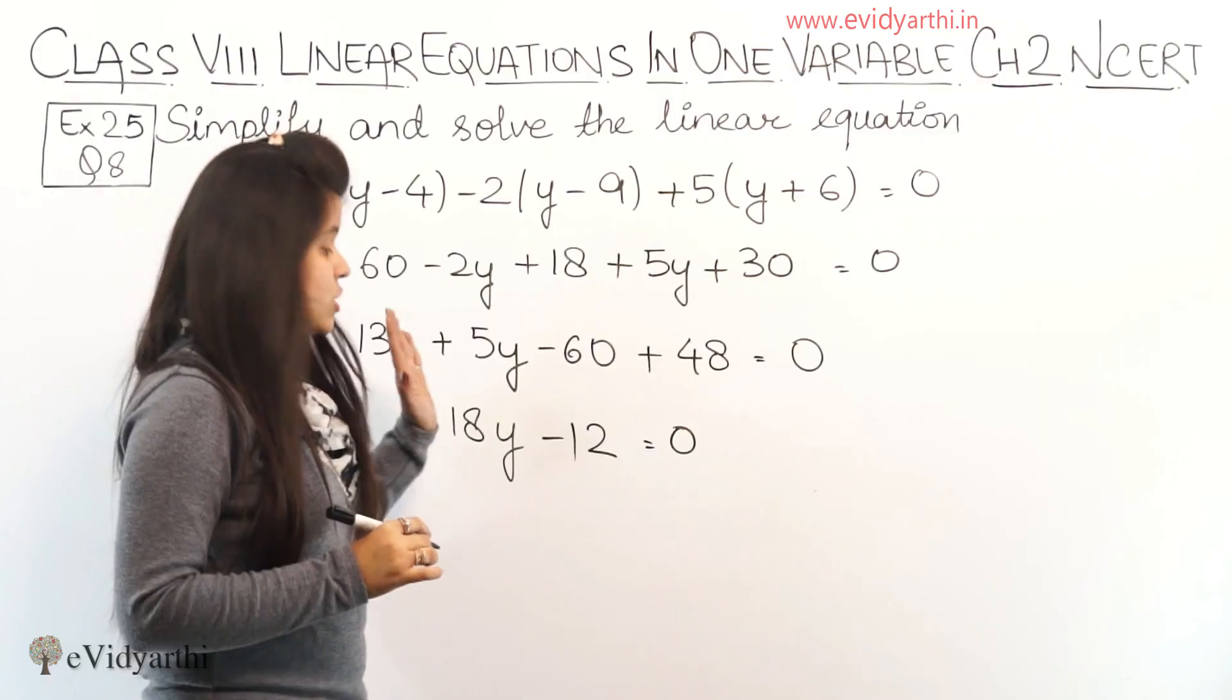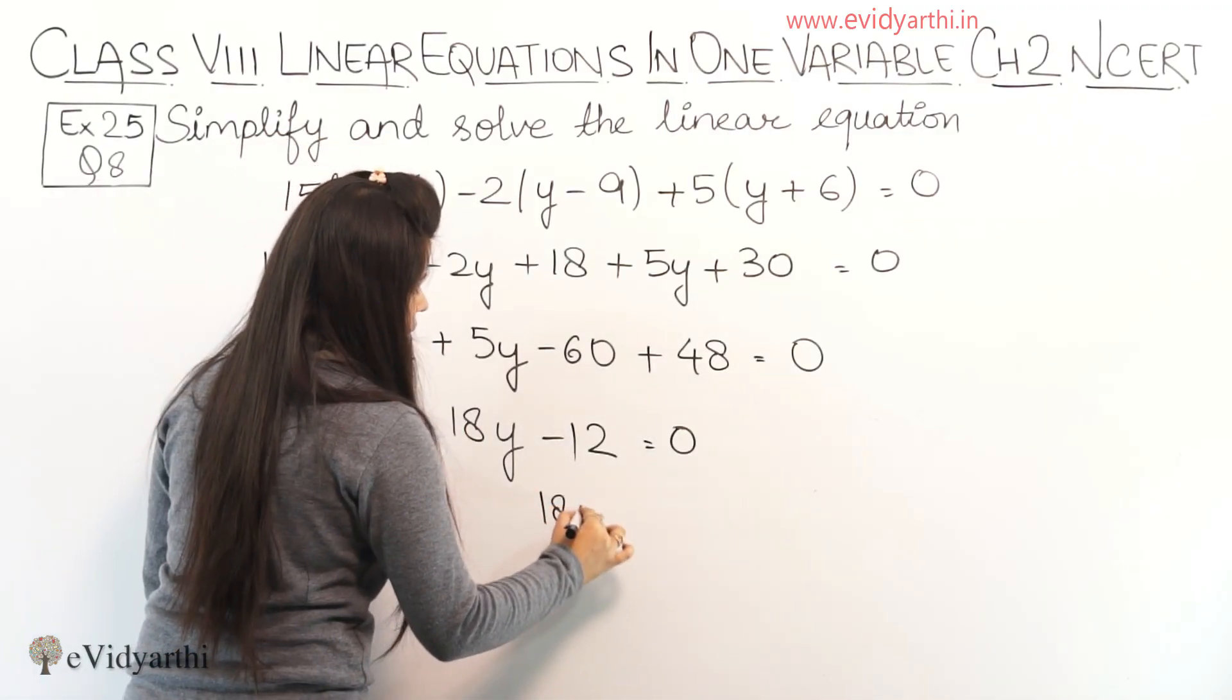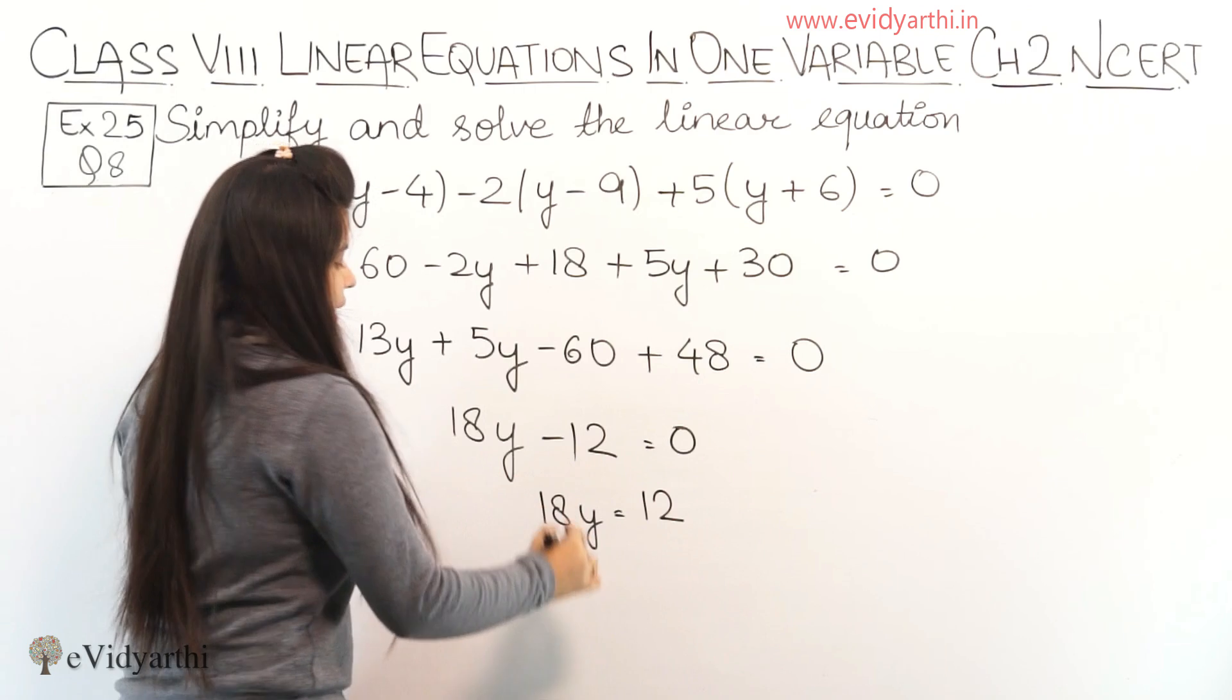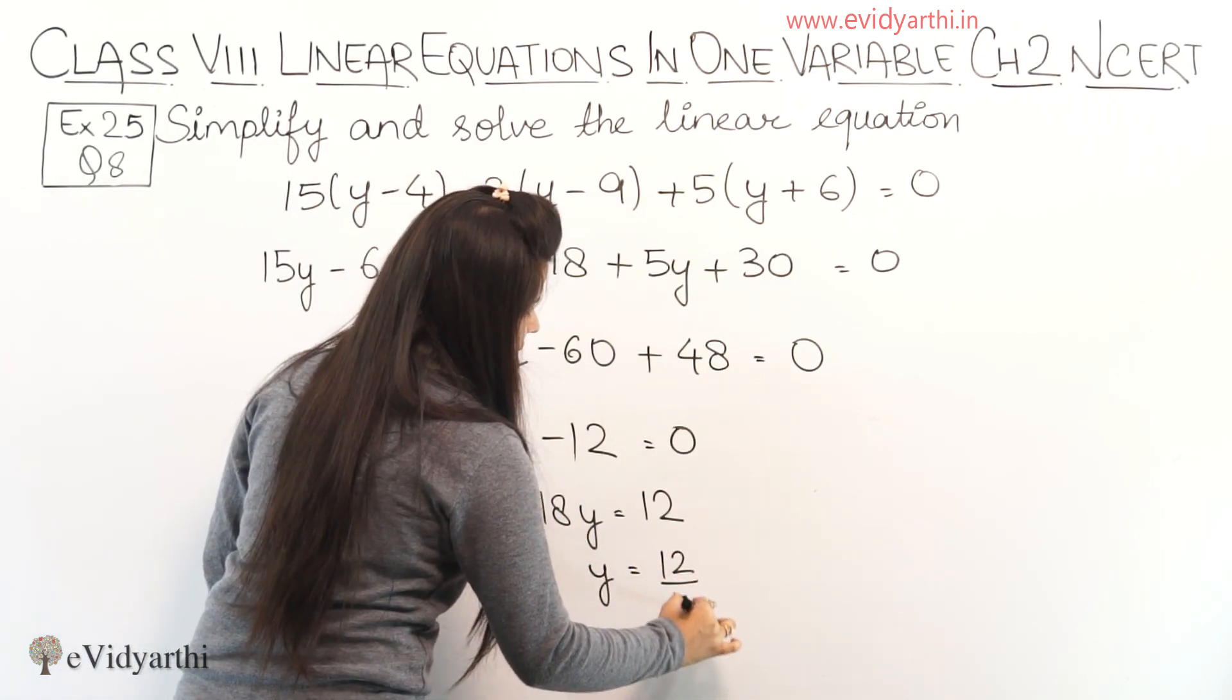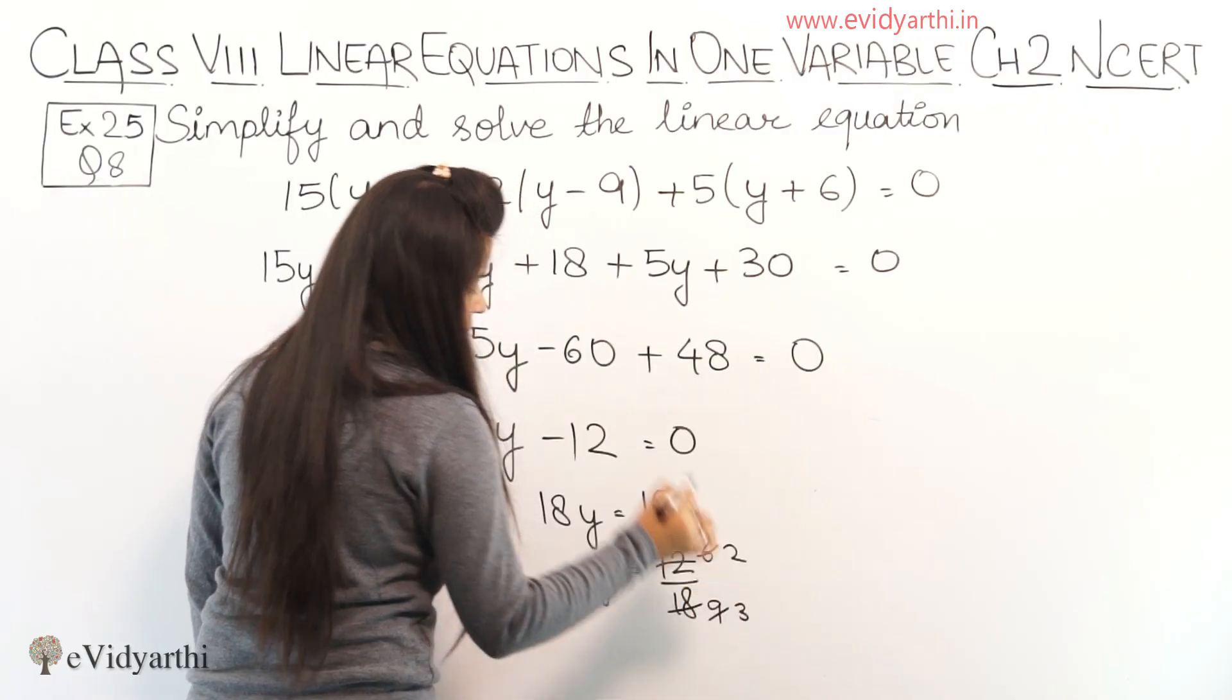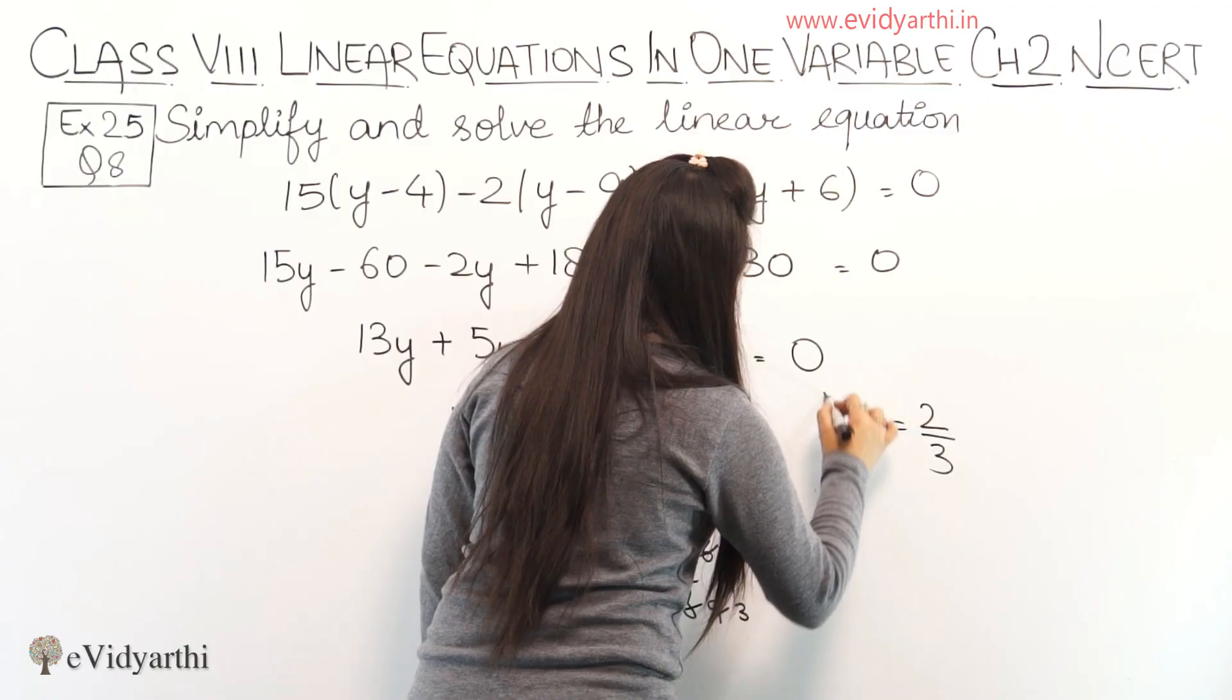Now we have to find y. So 12 will be sent to the other side. It will be 18y equals to 12. Minus 12 will go to the other side and become plus 12. Now y equals to 12 upon 18. Now we will cancel this. This will be 6, this will be 9, this will be 2, and this will be 3. So y equals to 2 upon 3.